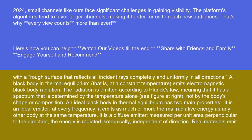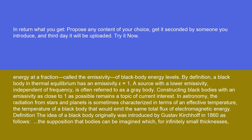Real materials emit energy at a fraction called the emissivity of black body energy levels. By definition, a black body in thermal equilibrium has an emissivity epsilon equals one. A source with a lower emissivity, independent of frequency, is often referred to as a gray body. In astronomy, the radiation from stars and planets is sometimes characterized in terms of an effective temperature — the temperature of a black body that would emit the same total flux of electromagnetic energy.